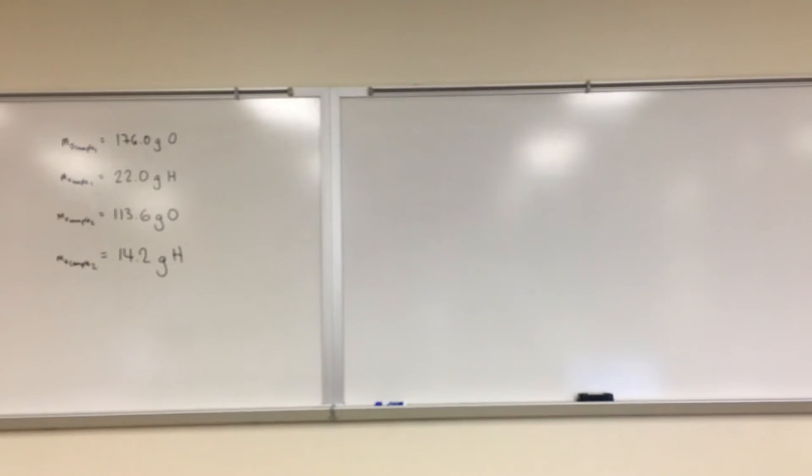Let's do another group of problems on the law of constant composition. If we have two samples of water obtained from different sources and they're decomposed into their constituent elements, one sample produces 176.0 grams of oxygen and 22.0 grams of hydrogen, and sample two produces 113.6 grams of oxygen and 14.2 grams of hydrogen. Show that the results are consistent with the law of constant composition.